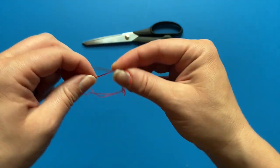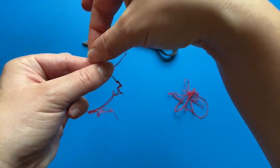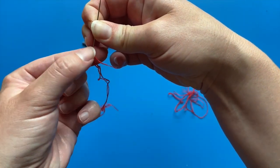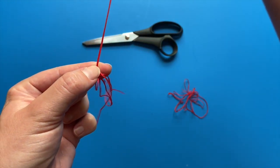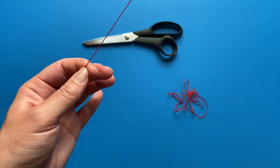I take the very end of the thread and wrap it three times around the needle. With one hand, I hold on to the wrapped area and keep it between my thumb and finger. With the other hand, I pull the needle and thread through the wrapping. At the end of pulling, it will make a knot.